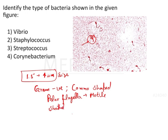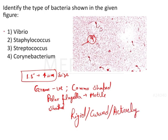These types of bacteria are generally rigid, curved, and actively motile. These are the various features of these bacteria, that is why these are known as the Vibrios.